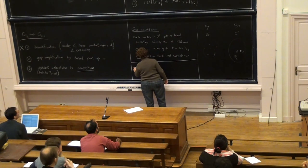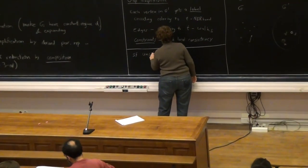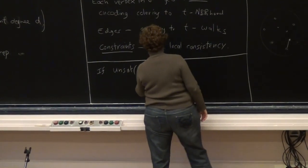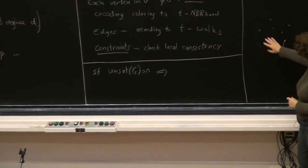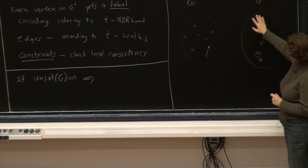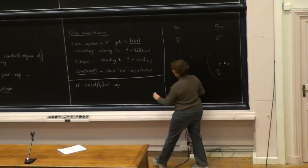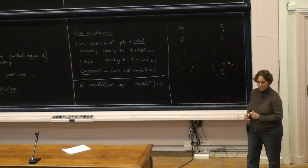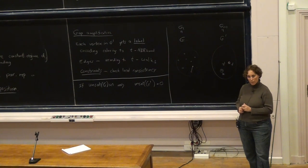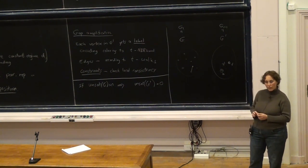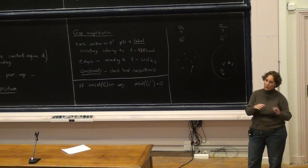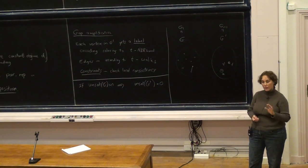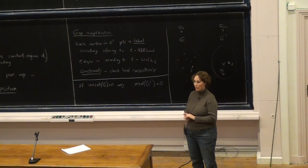So the first claim is: if the unsat of G was zero — you could perfectly color the entire thing — then you can perfectly label G prime so that all constraints are satisfied. For now, G is a 3-coloring graph, but G prime is a multigraph with labels for vertices and constraints on the edges. G prime is a constraint satisfaction problem: you assign to each vertex not just one color but a picture of what a local neighborhood could look like, and the consistency condition determines whether G is okay.